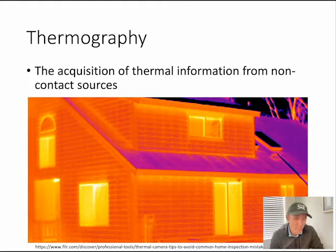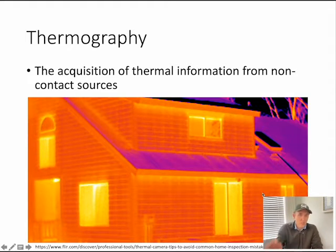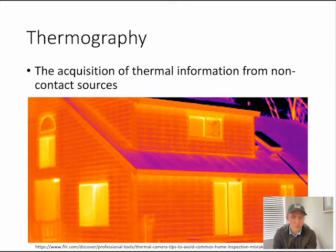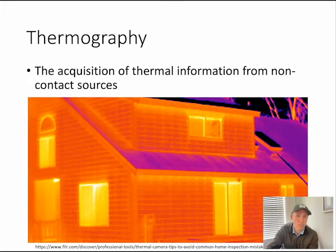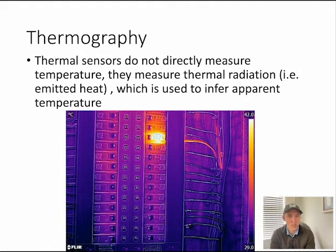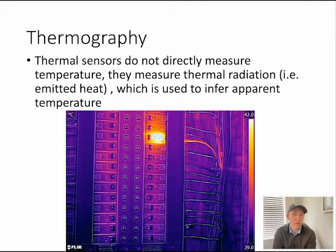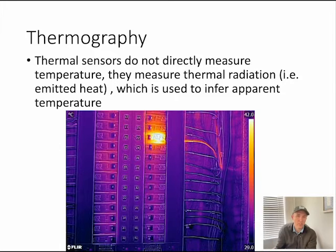Many of us are familiar with non-mapping applications of thermal imaging, like this thermal image of a house. Thermal imaging is essentially trying to get temperature information using a non-contact source — we're not touching the object or using a direct thermometer. The problem is that thermal sensors don't directly measure temperature. They measure thermal radiation, i.e. emitted heat, and then use that to infer apparent temperature. That can lead to complications — for example, a hot-looking breaker may not actually be hot; there could be other effects at play.